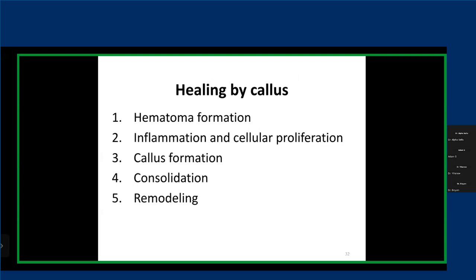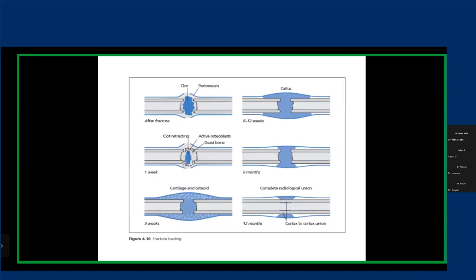Here are some images to reiterate: initially we get hematoma formation within 24 to 48 hours. Then the clot is broken down and invaded by inflammatory cells and cytokines, there's neovascularization, and chondroblasts are introduced to the site. Those chondroblasts lay out the callus, which serves as a bridge and decreases the strain at the fracture site — ultimately allowing osteoblasts to lay down new bone. Remodeling takes years.